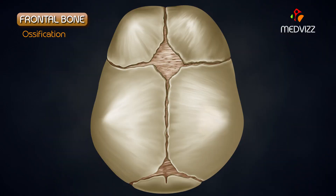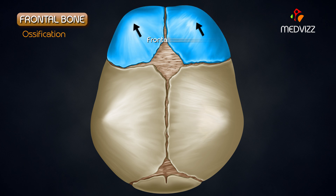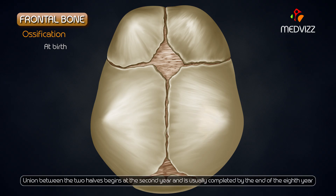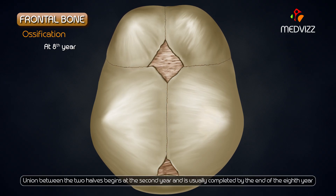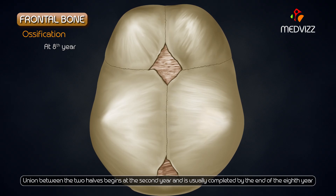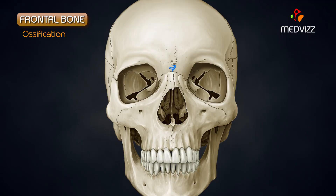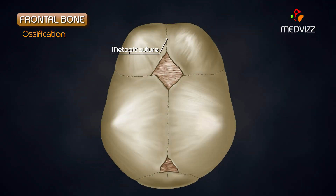Ossification. The frontal bone ossifies in membrane. The primary centers appear one for each half of the frontal bone in the region of the frontal tuberosity. At birth, the frontal bone is made up of two halves separated by a median frontal suture. The union between the two halves begins at the second year and is usually completed by the end of the eighth year. The remains of the suture in the adult are often seen in the region of the glabella, and this is termed the metopic suture.